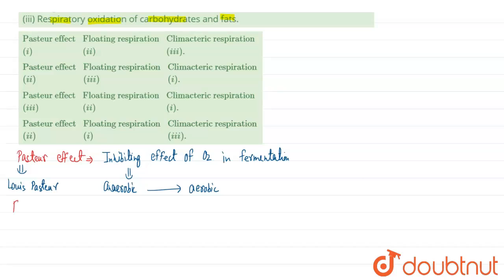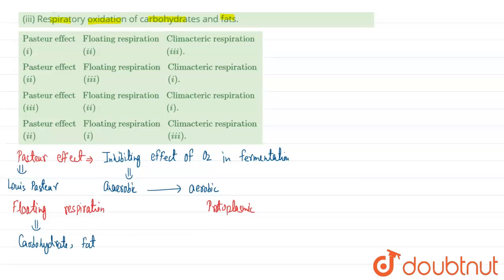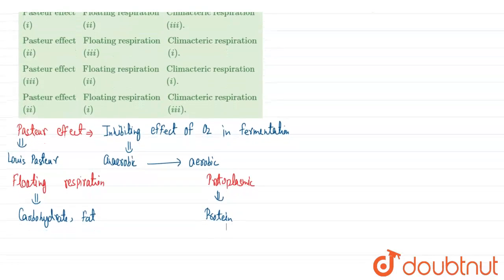The second term is floating respiration. Respiration is of two types based on the mode of the respiratory substrate: one is floating respiration and the second is protoplasmic respiration. In floating respiration, the respiratory substrate is carbohydrate and fat — oxidation of these substances occurs to produce energy. In protoplasmic respiration, the respiratory substrate is protein.